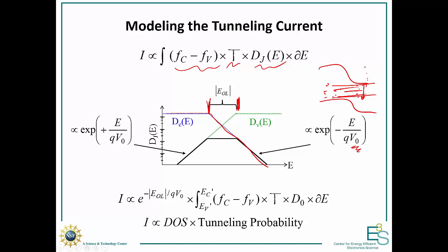Let's assume the conduction band density of states falls off proportional to some steepness V-naught. The valence band similarly has a density of states that's high in the band and falls off exponentially going into the band gap. Our joint density of states is the product of these two. Taking the product of the decreasing conduction band line with the increasing valence band line, we find that the joint density of states is roughly constant across the entire overlap region, given by e to the minus E_OL over q·V-naught. Since this is roughly constant, we can pull it out of the integral.